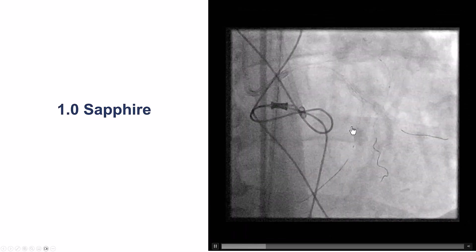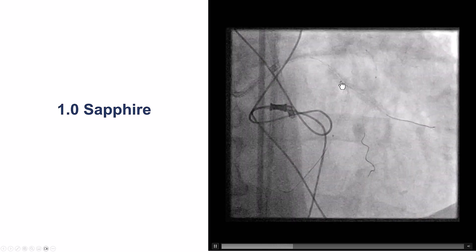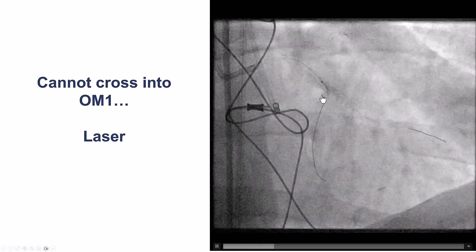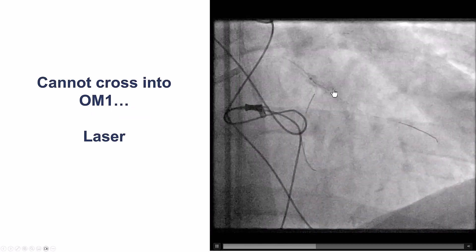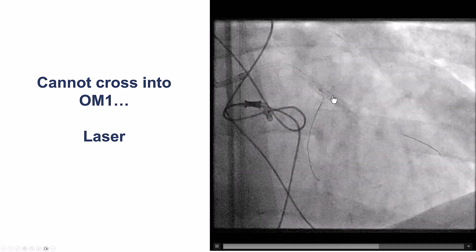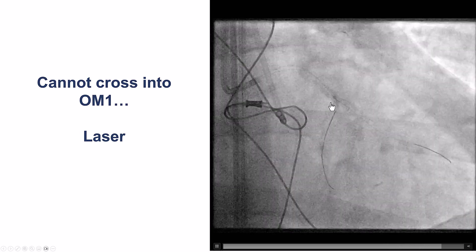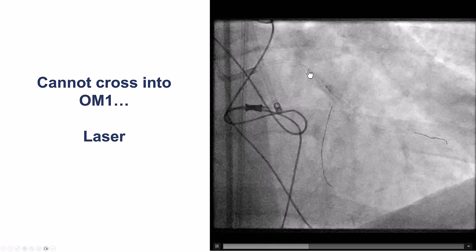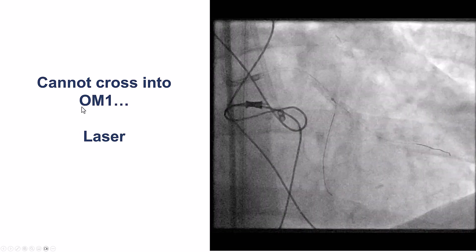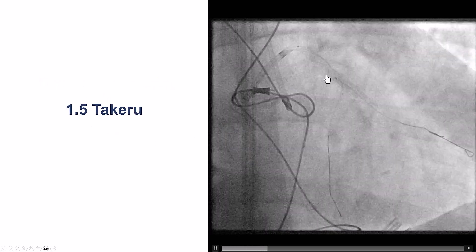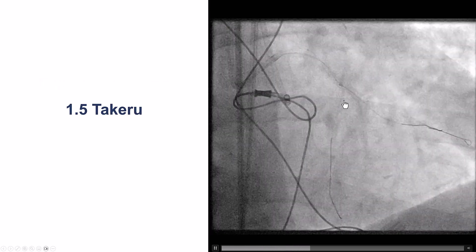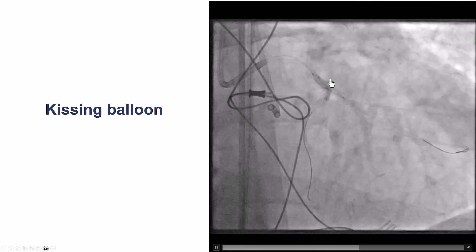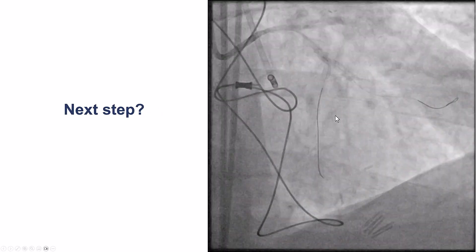We did inflations with a 1.0 mm Sapphire balloon — it was fairly hard getting it down and we still had to use the side branch anchoring technique. After that, we could not advance a balloon again into the first obtuse marginal. There were likely some stent struts from the bifurcation stenting that were disrupted and causing difficulty. After trying multiple balloons, we ended up using laser. Following that, with a 1.5 mm Takeru balloon we were able to advance across into the obtuse marginal branch, placing balloons in both branches for kissing balloon inflation.